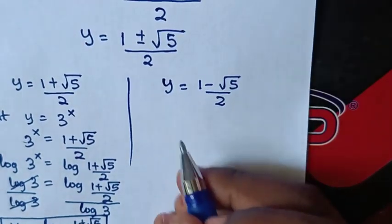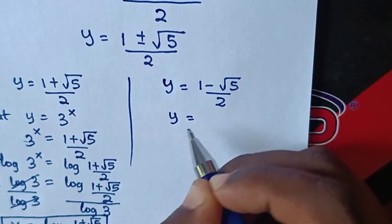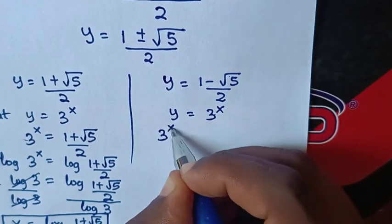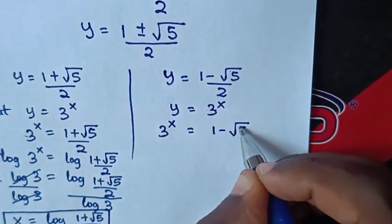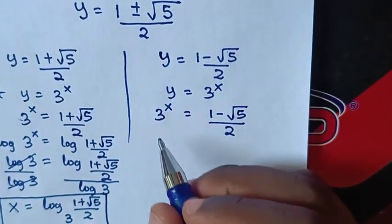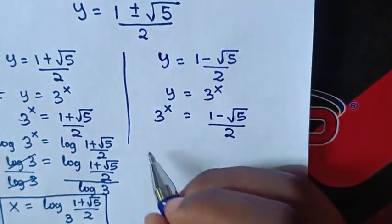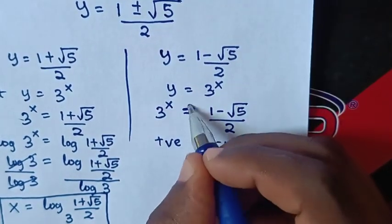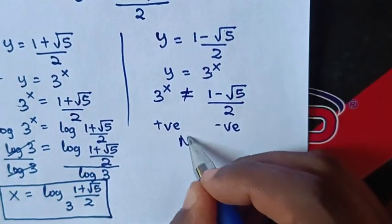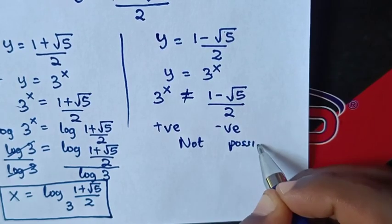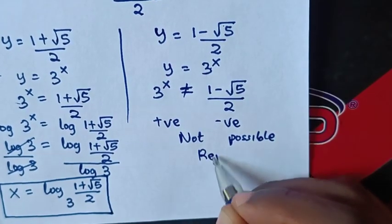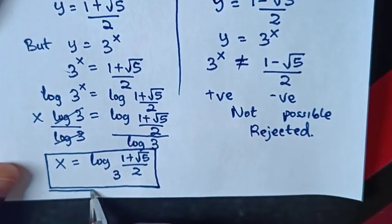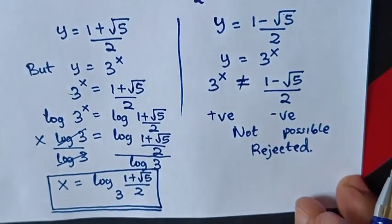For the second solution, y equals 3 power x, so 3 power x equals (1 minus root 5) over 2. But 3 to any power is always positive, and (1 minus root 5) over 2 is negative, so this cannot be equal. Therefore this solution is rejected. The only solution for x is log base 3 of (1 plus root 5) over 2.